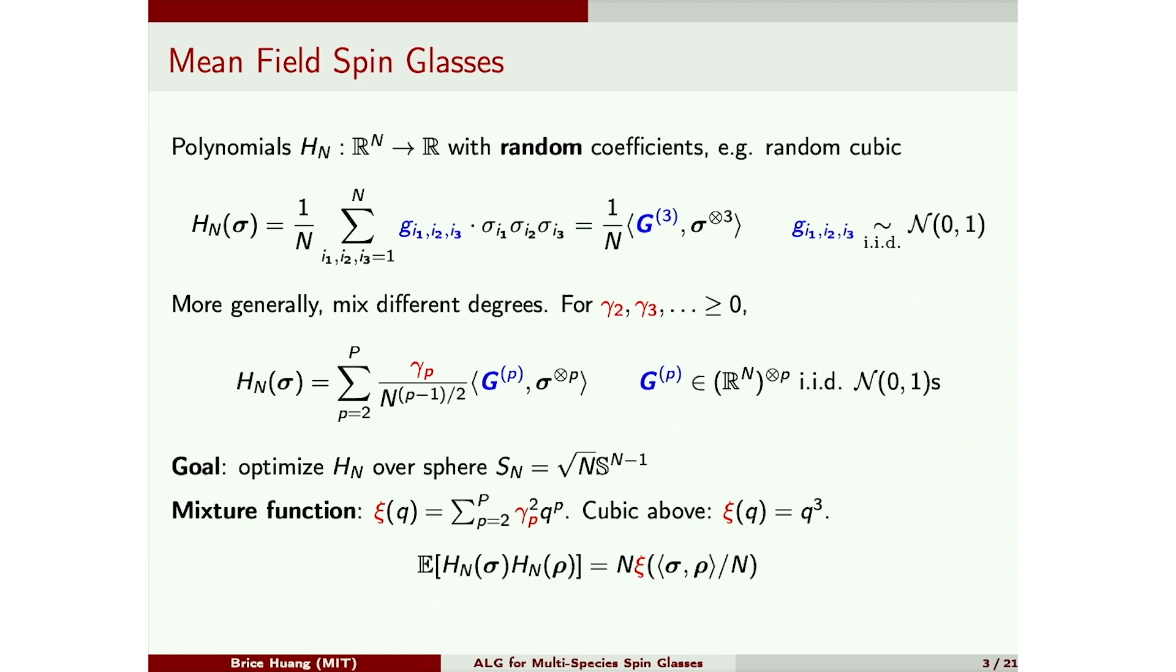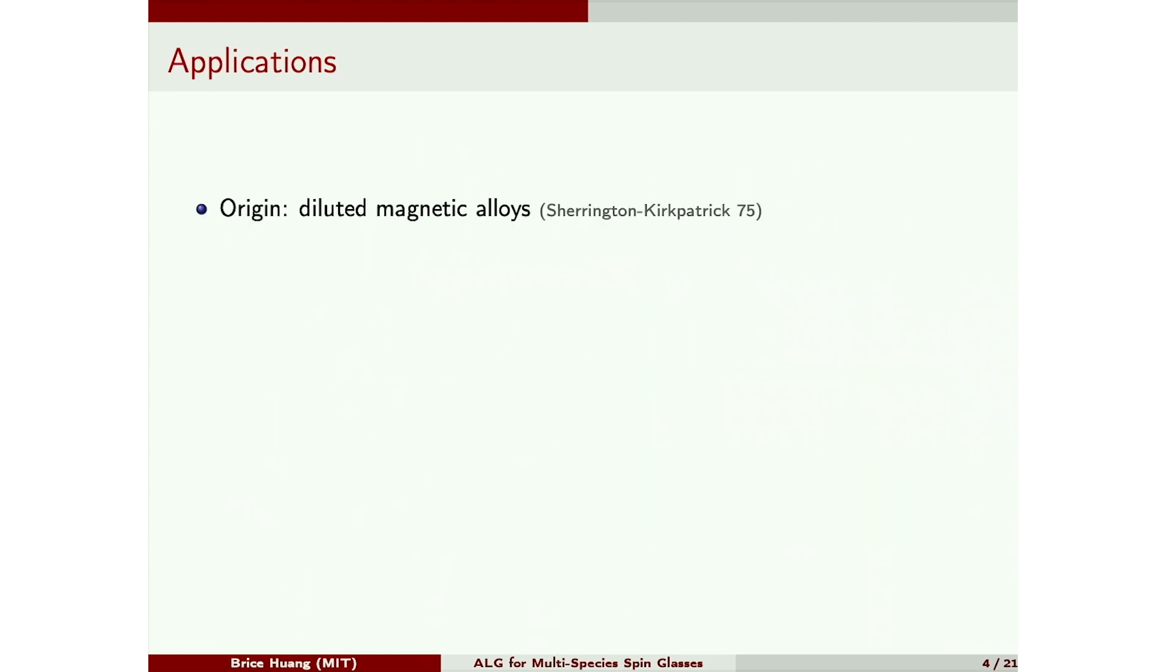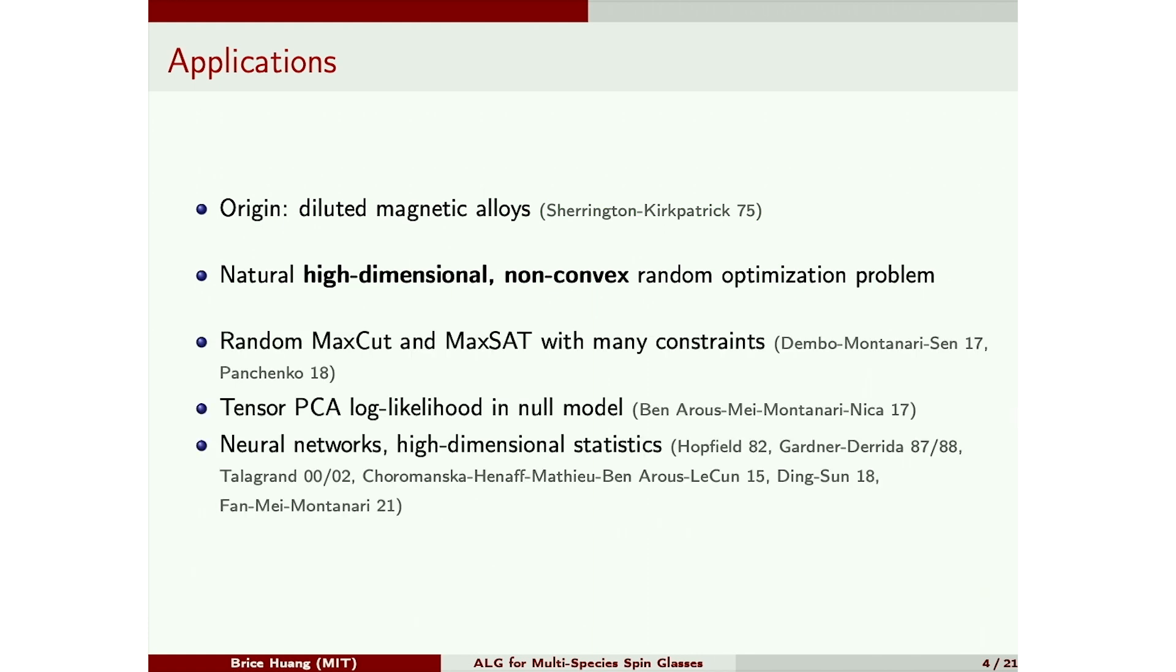So these models originated in statistical physics to study certain diluted magnetic alloys, but have since seen connections to both probability and computer science. One reason we'll care about them is that they're a clean example of a random optimization problem. And this makes them a natural sandbox for understanding the computational properties of these problems, maybe more generally. There's also direct connections to specific random optimization problems. So if you consider random constraint satisfaction problems like max-cut and max-SAT, take a large constraint density limit and appropriately recenter and rescale, you end up with exactly this mean field model.